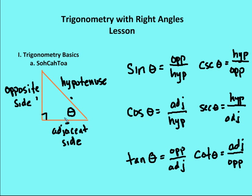An acronym which is pretty common in talking about trigonometry is called SOH CAH TOA. SOH CAH TOA tells you that sine is the opposite over the hypotenuse, cosine is the adjacent over the hypotenuse, and tangent is the opposite over the adjacent side.